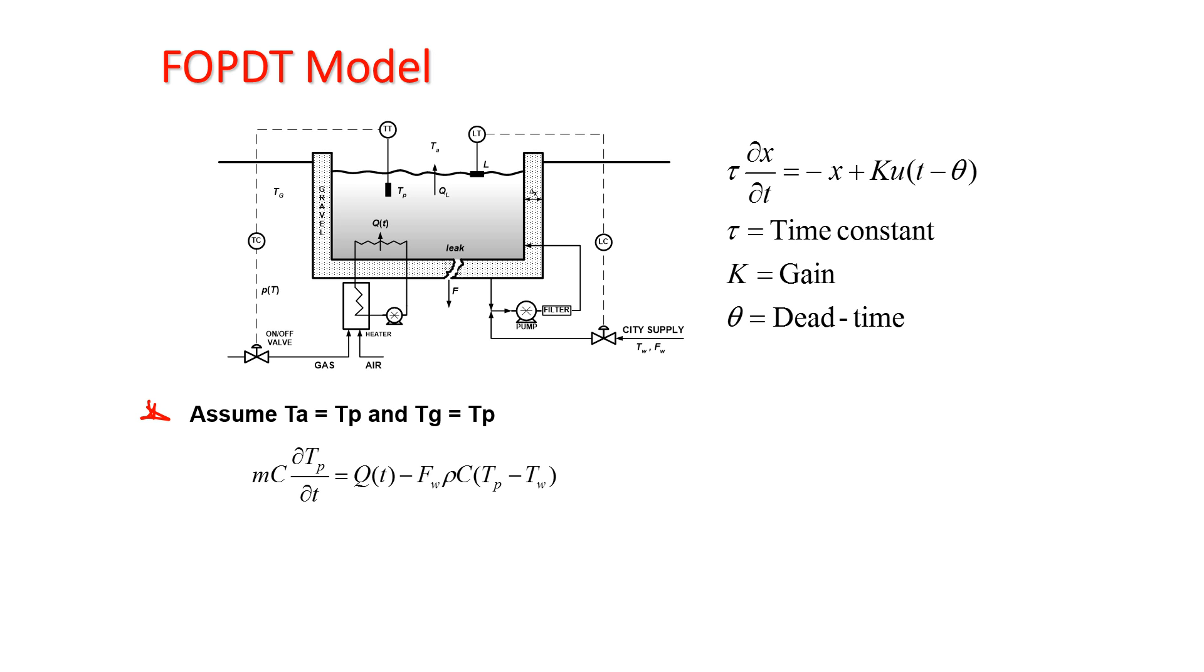I'm going to fit it into this first order plus dead time model form, and just rearrange the equation. So this becomes my tau P, and this bottom term here, that becomes my 1 over, that's going to be KP.